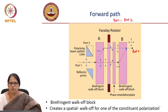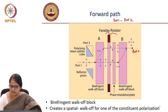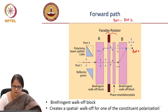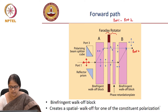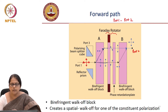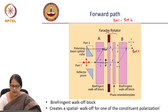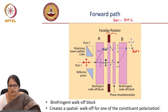You have a birefringent walk-off block and also this combination of Faraday rotator plus half-wave plate. The input could be in arbitrary polarization — this is a polarization insensitive circulator — which can be resolved into two orthogonal components. In this case, the birefringent walk-off block is such that the vertical polarization does not walk off, while the horizontal polarization undergoes a displacement. In the forward direction, the polarization axis gets rotated — horizontal becomes vertical and vertical becomes horizontal.